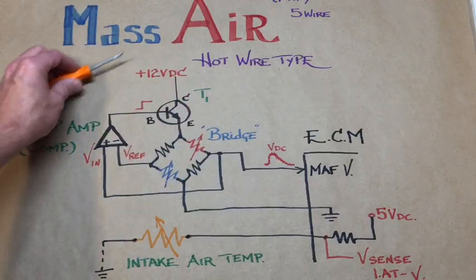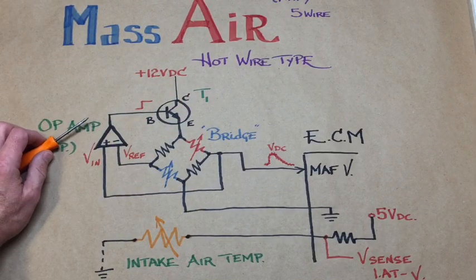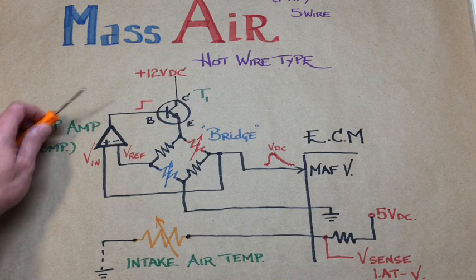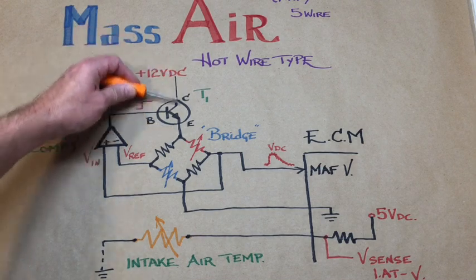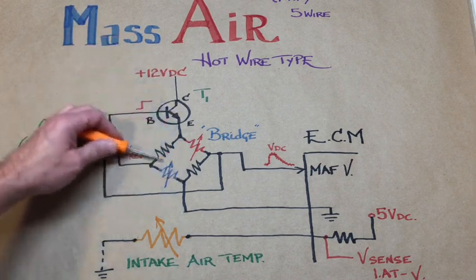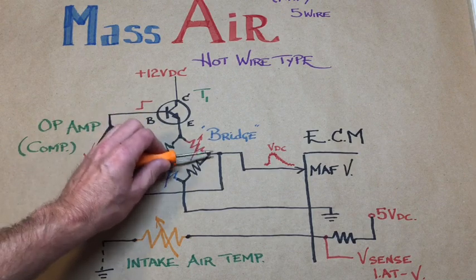The mass airflow sensor proper. Three separate elements to actually consider in the circuit. We have a transistor, which controls the amount of current that's going to be fed down to the bridge assembly here.